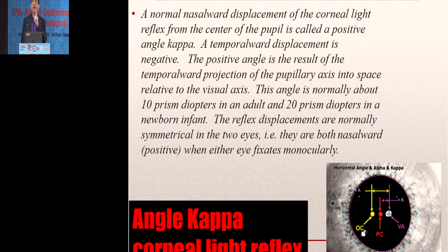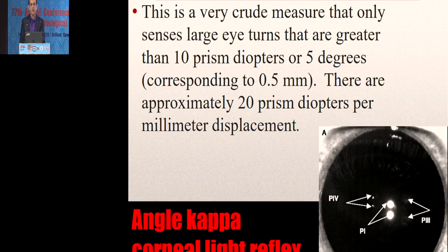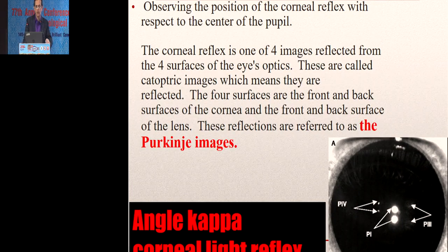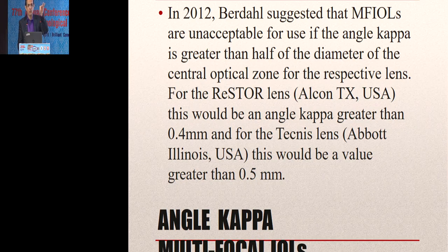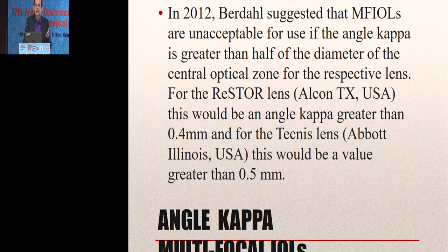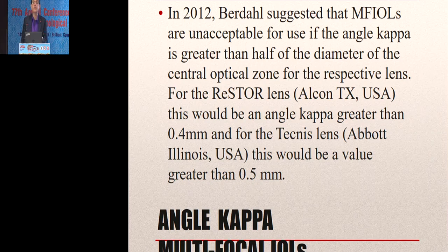Textbooks taught that normal angle kappa is 10 prism diopters, equal to 5 degrees, equal to 0.5 mm. The Hirschberg test using a torch is a very crude method using the principle of Purkinje images. For multifocal IOLs, the recommendation is if angle kappa is more than half the central diameter before the rings start — for Restore, if angle kappa is more than 0.4 mm, it's not a good idea.